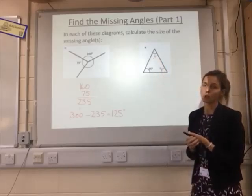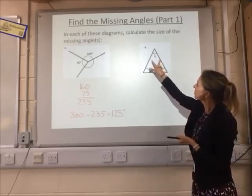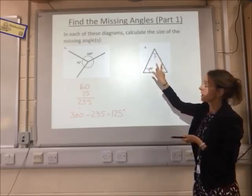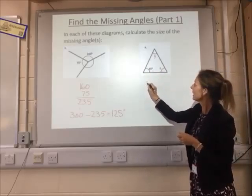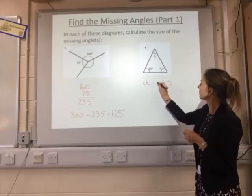So we've got an isosceles triangle here. If these two sides are the same in our isosceles triangle, these two angles are the same. So therefore A must be 65 degrees.